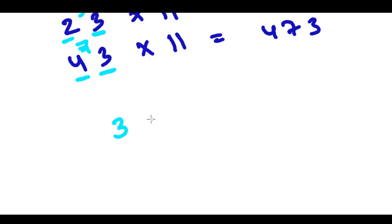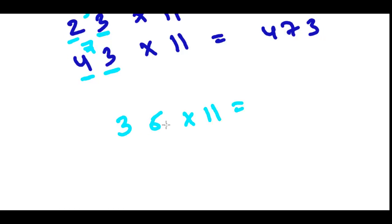Let's say you have now 36 times 11. So it's going to be? How much? Yes. It's 3, 9, 6. Because sum of 3 and 6 is 9. So that's the solution.